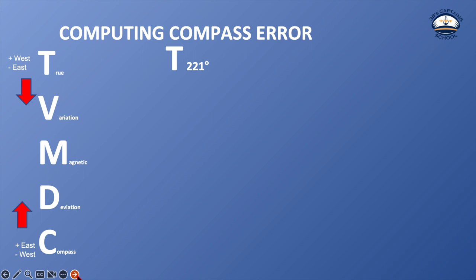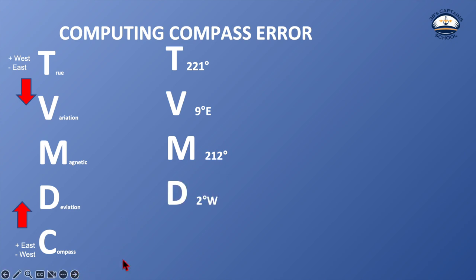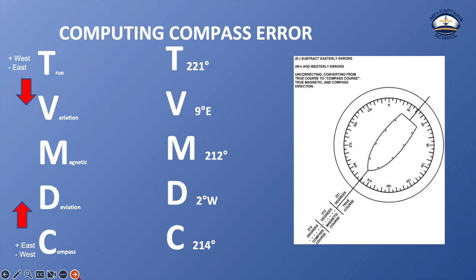Sample problem one: I have a true course of 221 degrees. I look at my compass rose and find 9 degrees east variation. Going down, I subtract east: 221 minus 9 equals 212 degrees magnetic. I then look at my deviation table and find that 212 degrees magnetic gives a deviation of 2 west. Going down, I add west: 212 plus 2 equals 214 degrees compass. So a true course of 221 degrees with 9 east variation gives 212 magnetic, and with 2 west deviation gives 214 degrees compass.